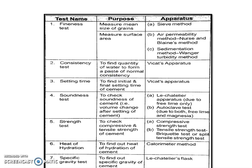Now let's do a summary. For the fineness test, we use the sieve method and the air permeability method. The purpose of the fineness method is to determine surface area and mean particle size. The sedimentation method can also be used.